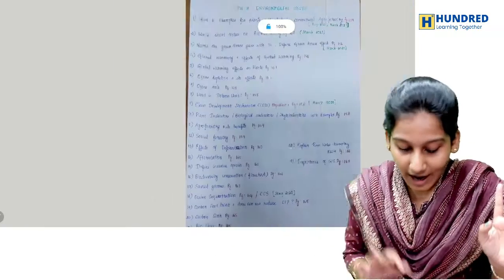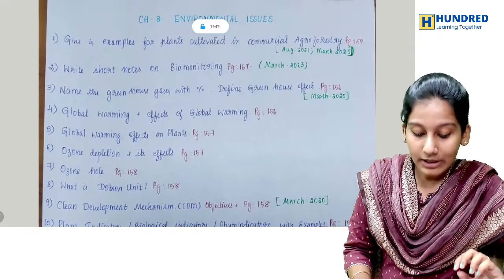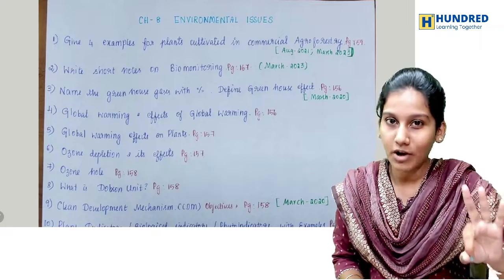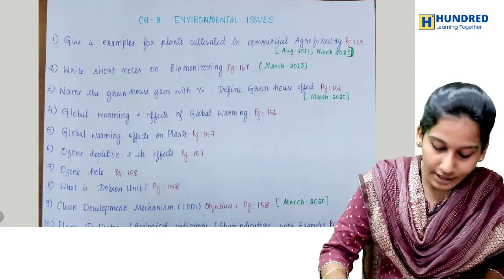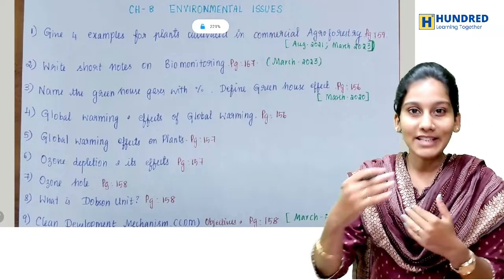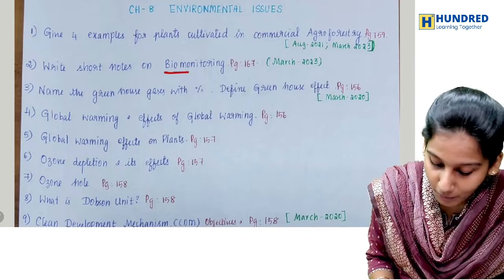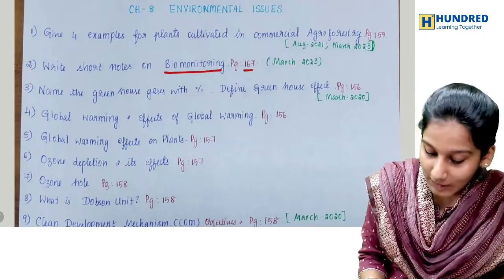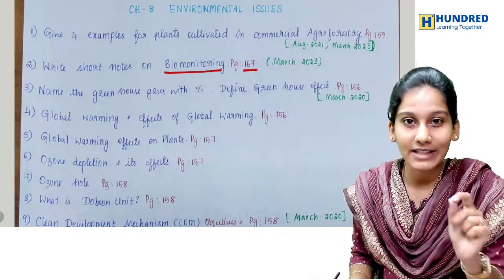These are the important questions from Chapter 7. Now Chapter 8 — Environmental Issues. This chapter is very important for 2-mark and 3-mark questions, and also 5 marks. In the 2023 public exam paper, the compulsory question was on biomonitoring. Page number 167, there is a green box — the answer is in that green box, so please do check that out.